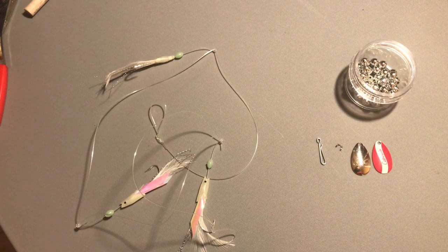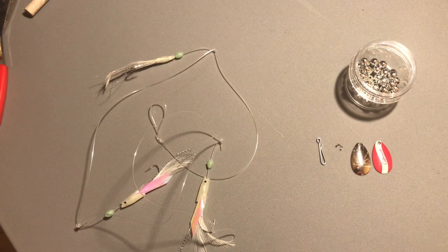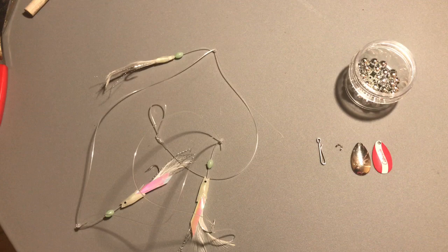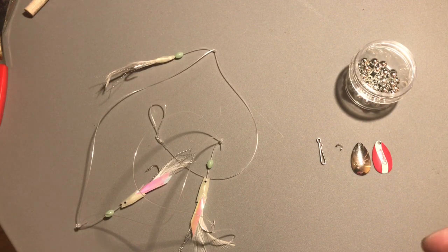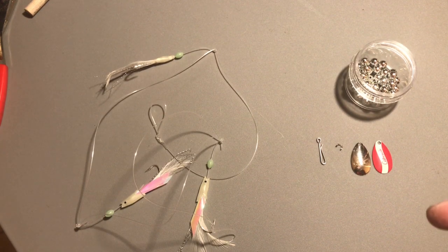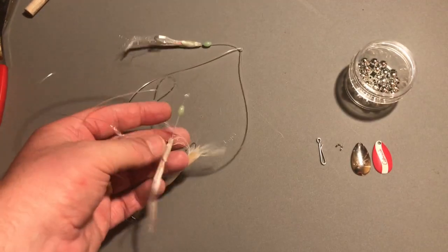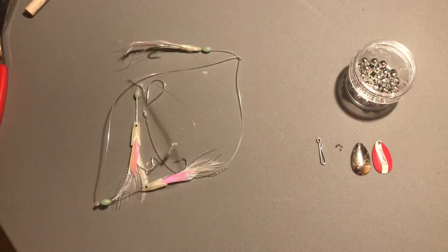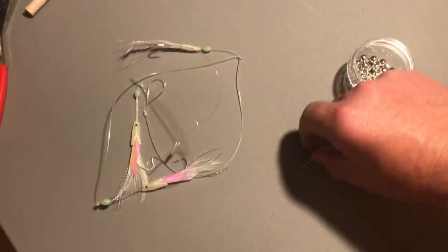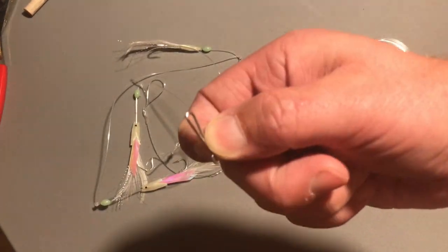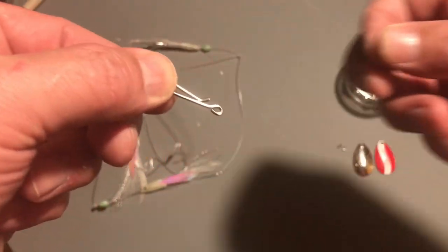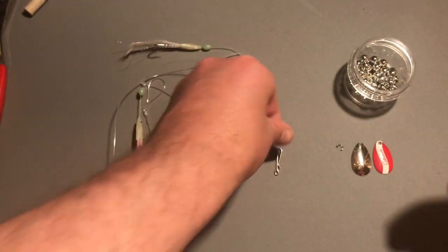Now what I'll do just before I make the rig is I'll go over what you're going to need to make each snood. So obviously what you'll need is your Hawkeyes which you're going to cut up, a quick link or you could use a swivel depending on what you want to use.